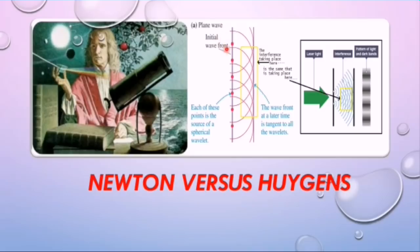Huygens' principle states that every point on a wave front, see this plane wave, every point, these circular red dots on a wave front, give rise to secondary wavelets, these small waves, which spread out in all directions with the speed of a wave. The new position of the wave front at time t can be determined using Huygens' principle. This new wave front is formed by drawing a line tangent to all the wavelets.